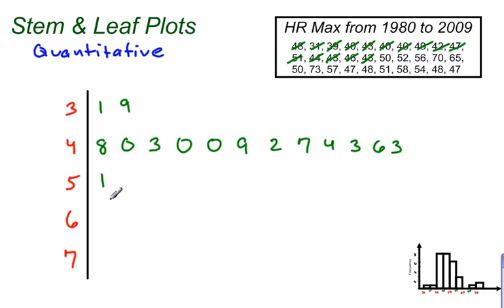And then we go 50, so 0 right there. 52, 56. So 52, 56. Then we get a 70. 0. 65 right there. A 50, so 50, put a 0 right here. 73 right there.